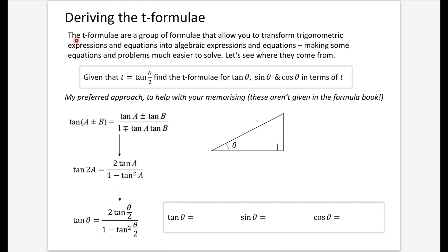The T formulae are a group of formulae that allow you to transform trigonometric expressions and equations into algebraic expressions and equations. The key thing is we're going from something trigonometric to something algebraic, and that can make some equations and problems much easier to solve.